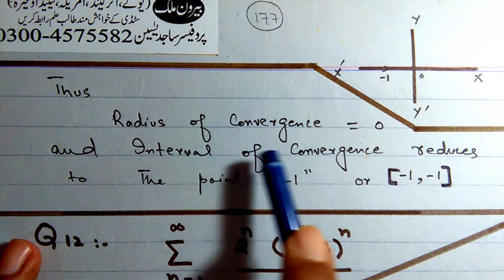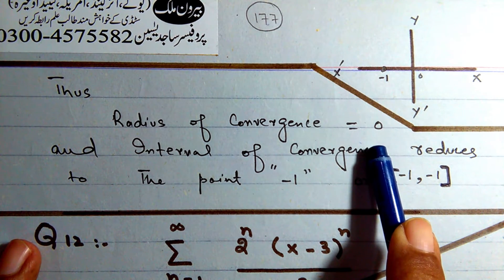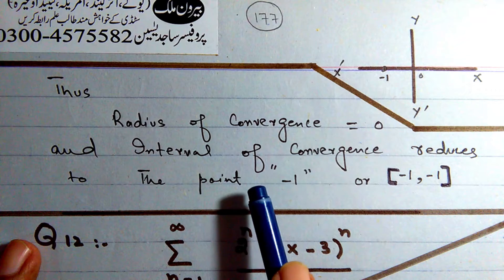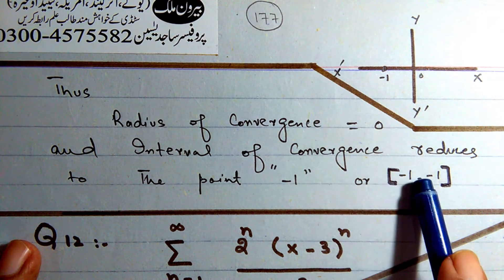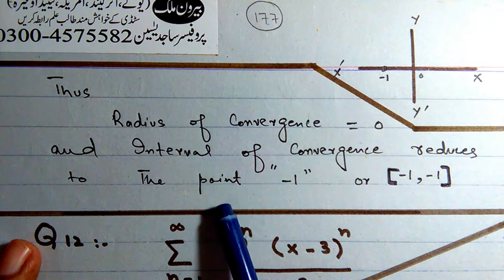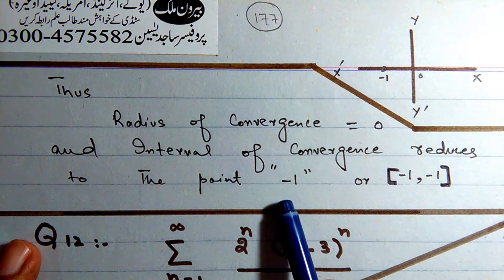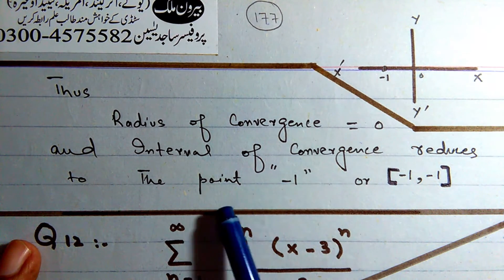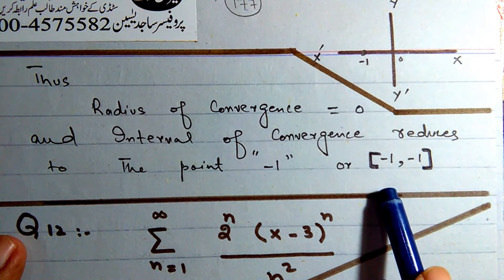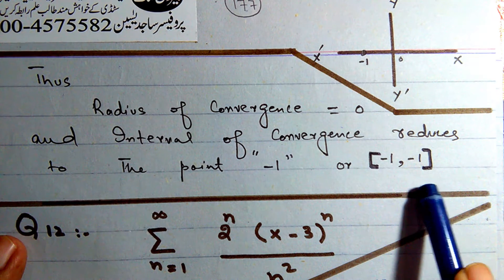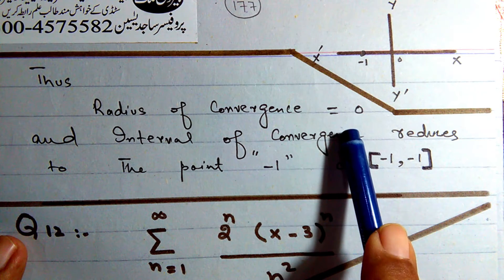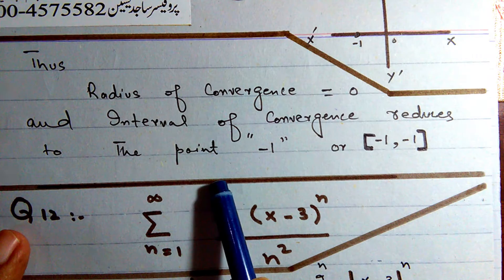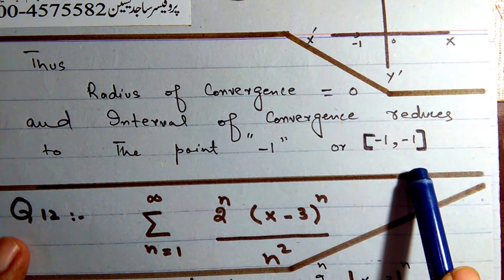Thus the radius of convergence is 0, and the interval of convergence reduces to the single point x = -1, written as the closed interval [-1, -1].